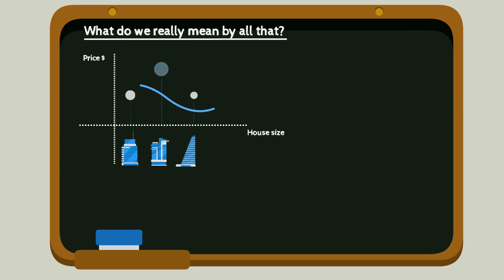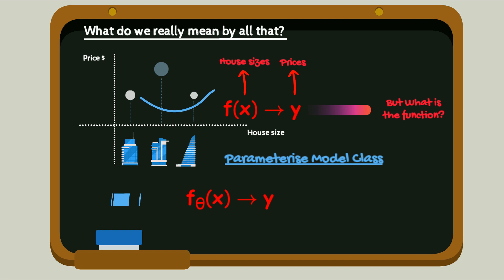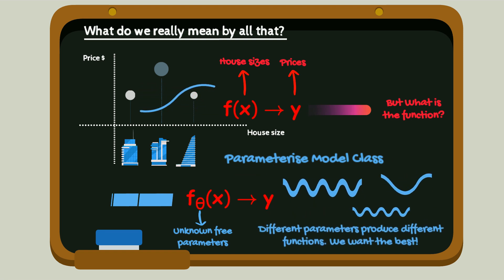In reality, we look for a function f that maps input x, i.e. house sizes, to outputs y or house prices. Since we don't know this function upfront, we parametrize a model or function class by unknown free parameters and look for the best set of parameters that minimize some notion of error.